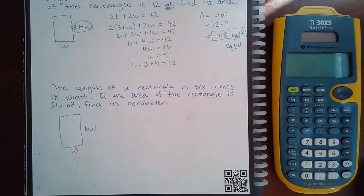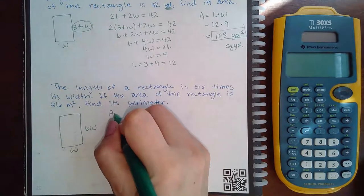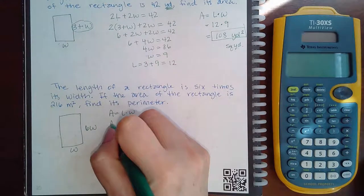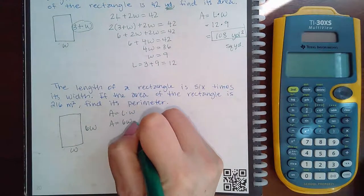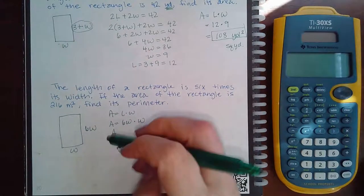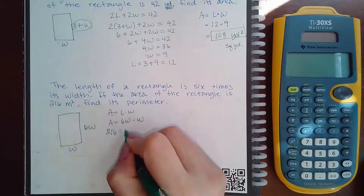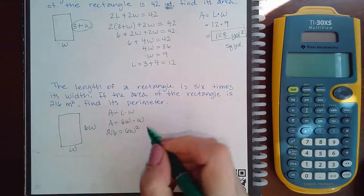If the area of the rectangle is 216 meters squared, so again, the area is length times width. So length is written as 6W, width is just written as W. But you know what that area is? It's 216 and I get 6W squared.